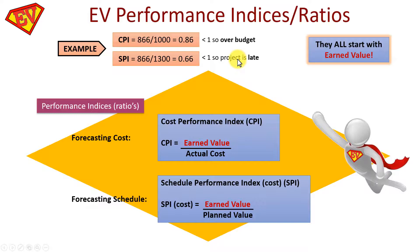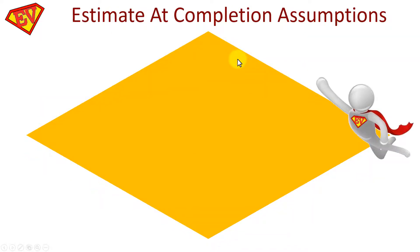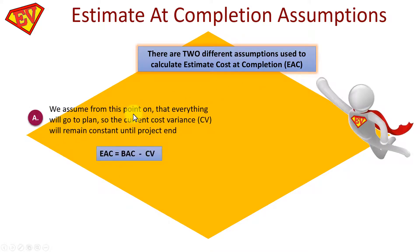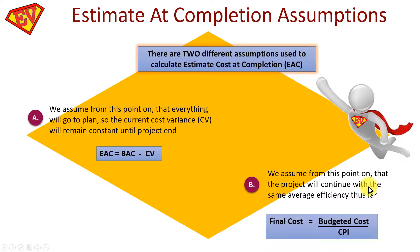For Estimate at Completion (EAC), there are two assumptions. First, if you assume from this point onwards everything will go to plan — the current Cost Variance remains constant — then EAC = BAC − CV. Second, if you assume the project will continue with the same average efficiency (CPI continues), then EAC = BAC ÷ CPI. The question will state which assumption to use, so be aware of both.